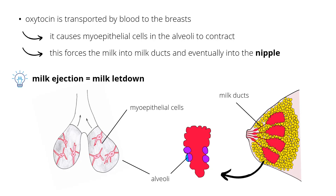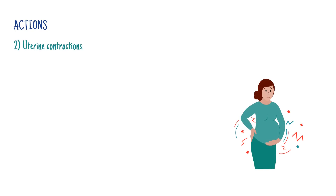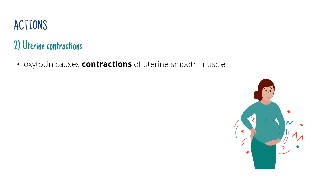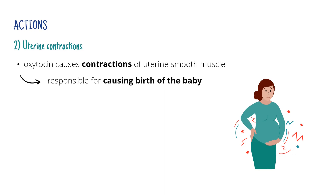The second effect is that oxytocin causes uterine contractions, or more specifically, contractions of uterine smooth muscle. These contractions are believed to be at least partially responsible for causing birth of the baby. And for that reason, oxytocin is also used for inducing labor.